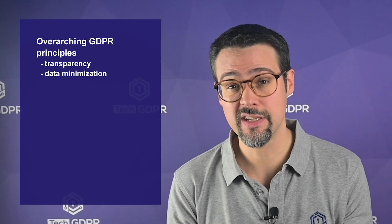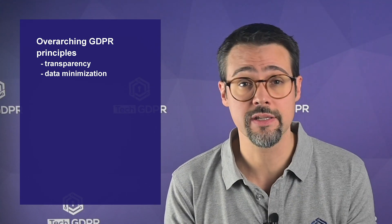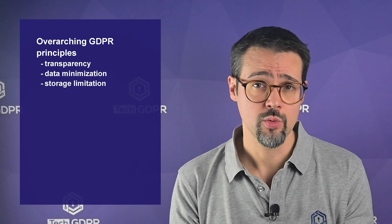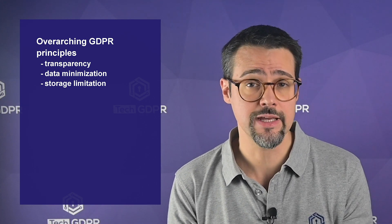Beyond the determination of GDPR roles, there are three important data protection principles to consider when developing an AI system that relies on personal data for the training of its algorithm. These are the principles of transparency, which deals with informing data subjects about what data is being collected and used; data minimization, which deals with only the data that is necessary for the purpose pursued; and storage limitation, which is controlling and defining how long the data may be retained for.